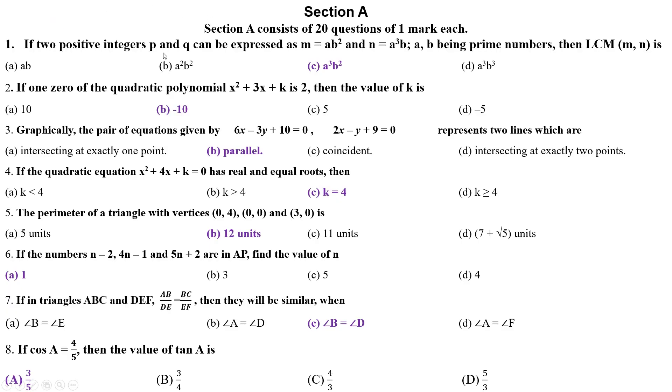If two positive integers P and Q can be expressed as m equals ab squared and n equals a cubed b, then LCM of mn is? When you find out the LCM in this exponential form, first you find out the highest power of a. It is not a only, it is a cubed. Where is the a cubed in this format? Option C is your correct answer because highest power of b is also 2. Option C is the correct answer.